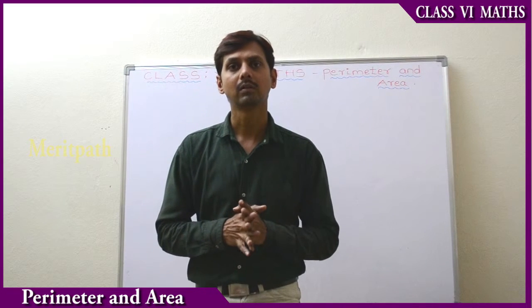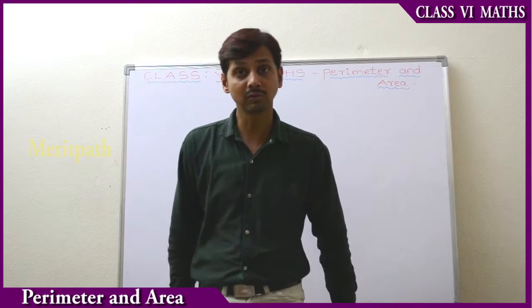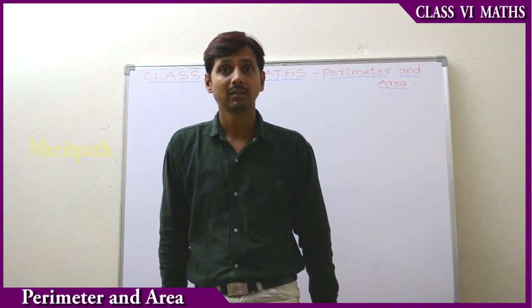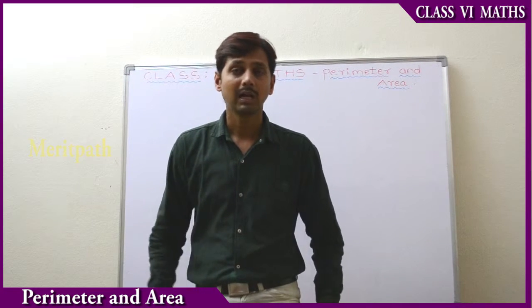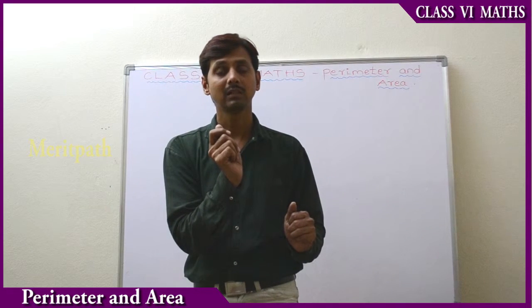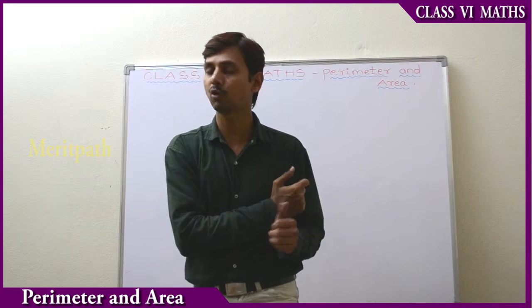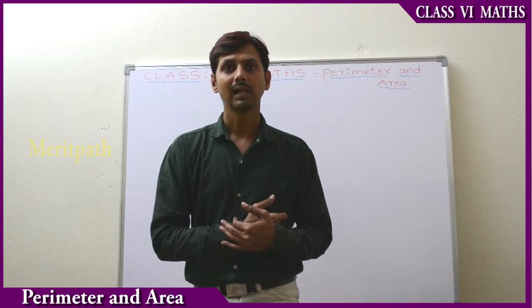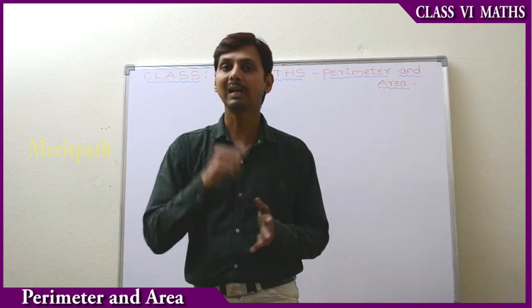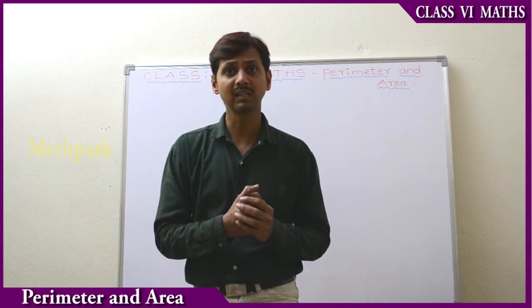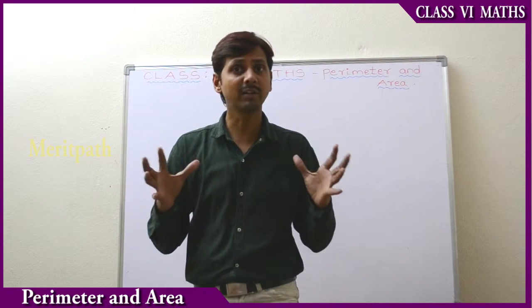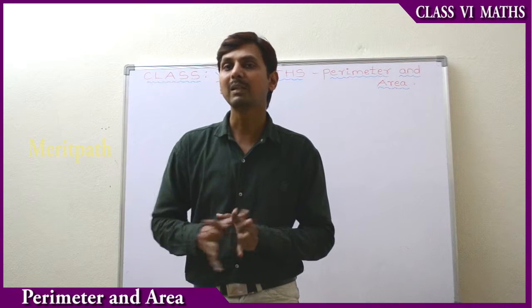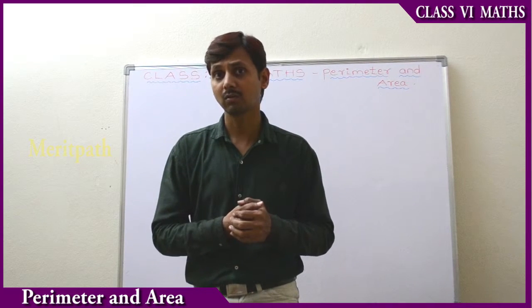So his father said to Rahul to measure it. Rahul took a measuring tape and started from one point on the border of the garden. He took one full round and completed it back at the initial point. So the boundary of the garden which he measured is nothing but the perimeter.